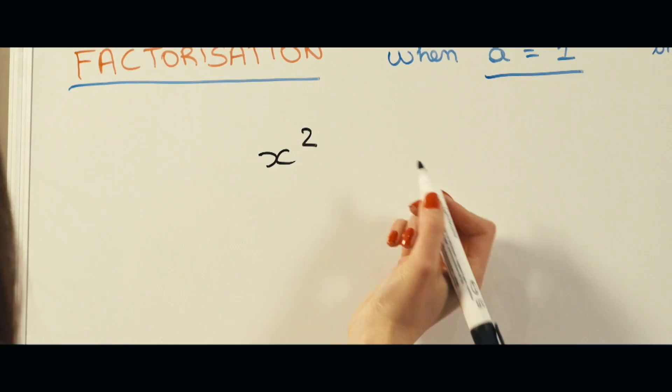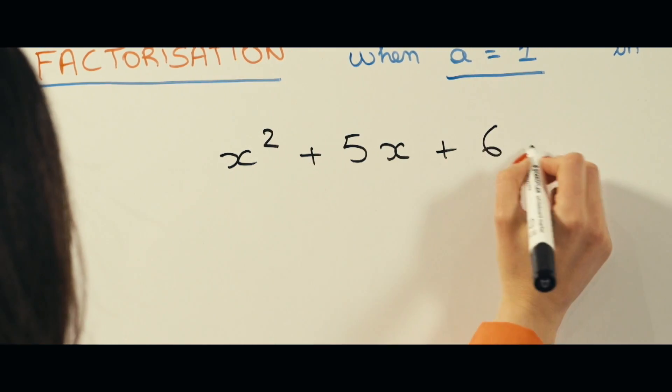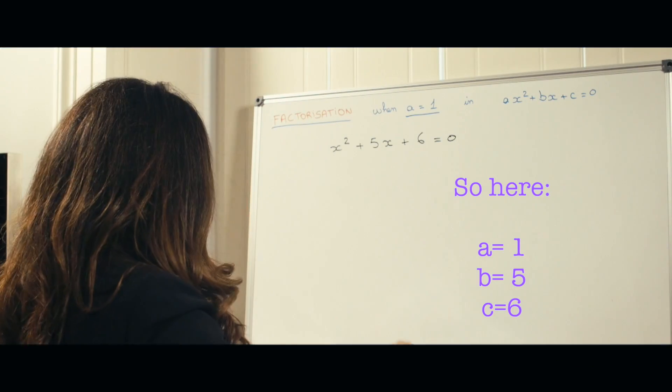X squared, for example, plus 5x plus 6 is equal to 0. What's in front of the x squared is 1. We have a trick for that.